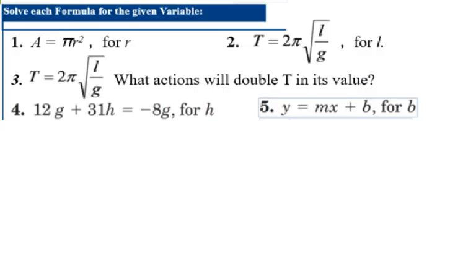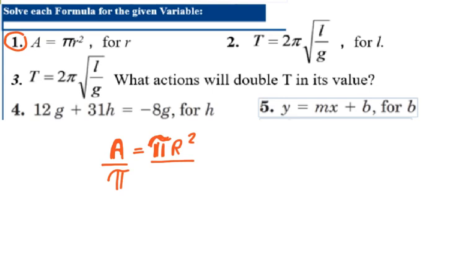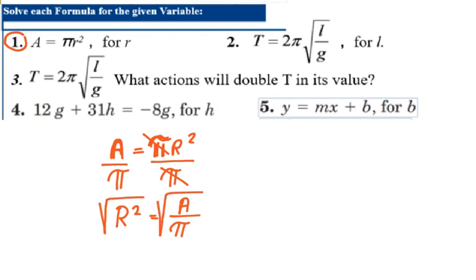You should be able to solve equations for a variable. For example, solve for r in the equation a = πr². I treat a and π as numbers and divide both sides by π. Pi cancels on the right side, leaving r² = a/π. Then I take the square root of both sides, and r = √(a/π).